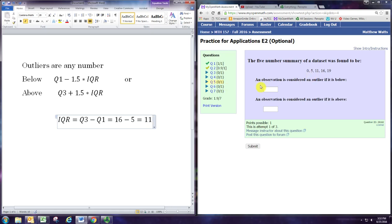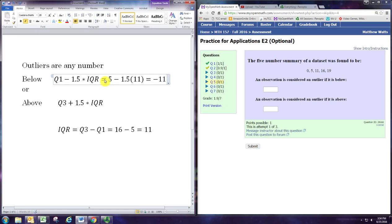To get the lower bound for numbers that are not outliers, we take the first quartile, which is 5, and subtract 1.5 times the interquartile range, in this case, 11. 1.5 times 11 is 16.5. So 5 minus 16.5 is negative 11.5.